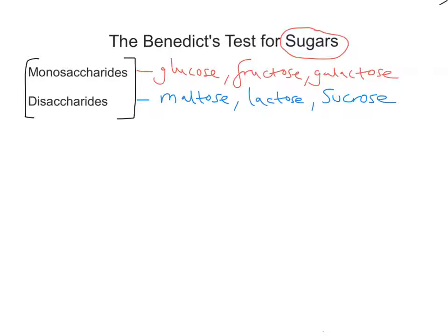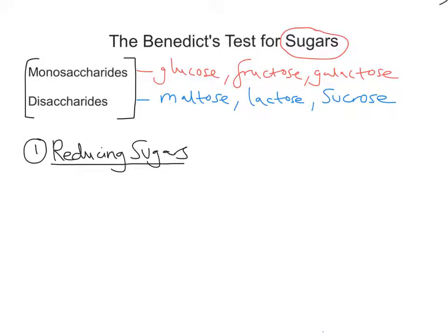When we talk about Benedict's test for sugars, we're really testing for monosaccharides and disaccharides. We split the Benedict's test into two parts. First, we're going to look for what's called reducing sugars. Reducing sugars include all the monosaccharides named — glucose, fructose, galactose — but also some disaccharides: maltose and lactose are part of the reducing sugar category.